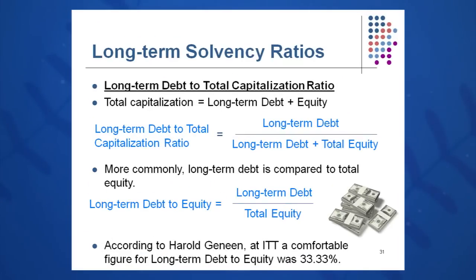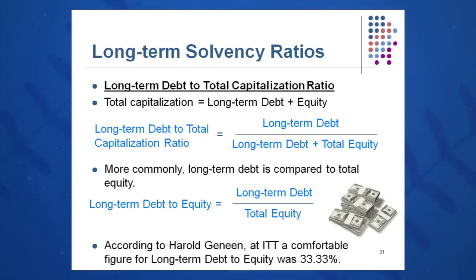Some other long-term solvency ratios, used less frequently, include long-term debt to total capitalization. More heavily used is long-term debt to equity, which is very popular among financial analysts in investment banks and industry — I'd put that number one in the long-term solvency category. Harold Geneen at ITT said in his book, Managing, that if he kept his long-term debt-to-equity ratio at 33 and a third percent, he could get any sort of capital on Wall Street at any time — whether floating stock or selling bonds. So 33 and a third percent is one benchmark you may hear for that ratio.